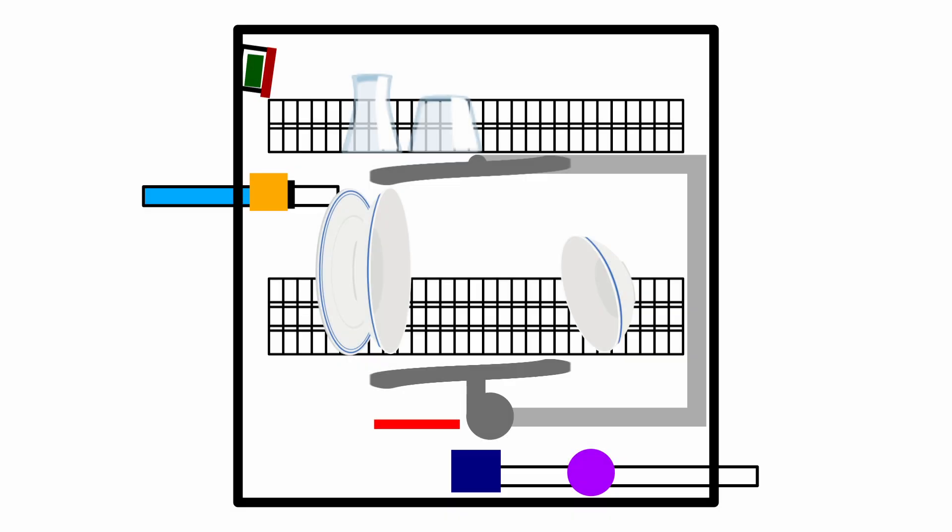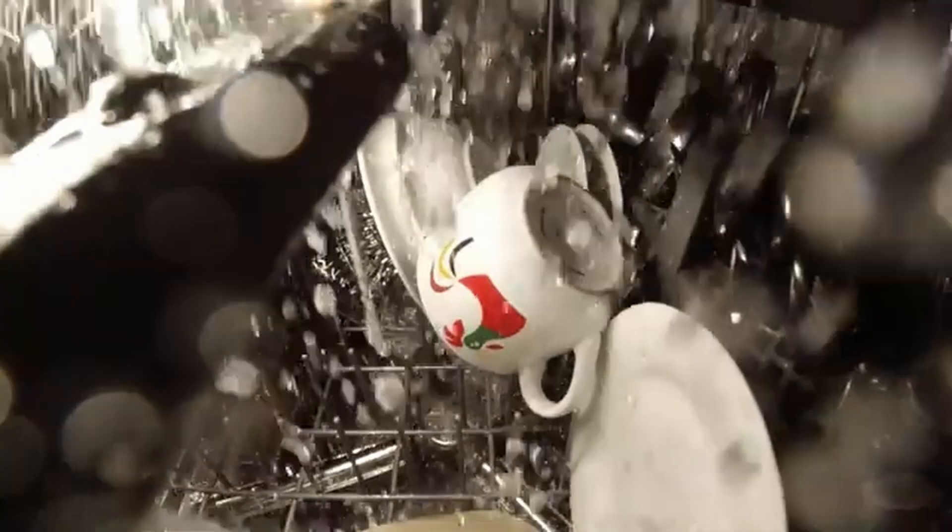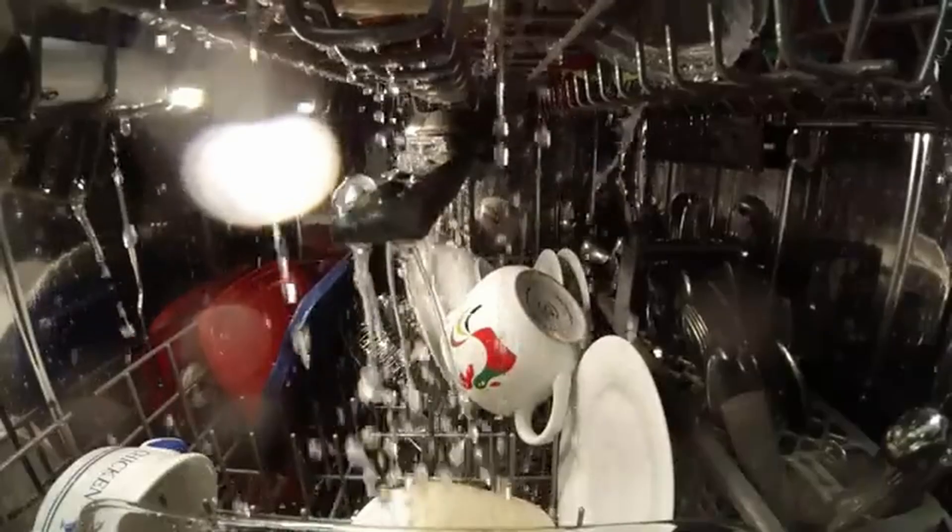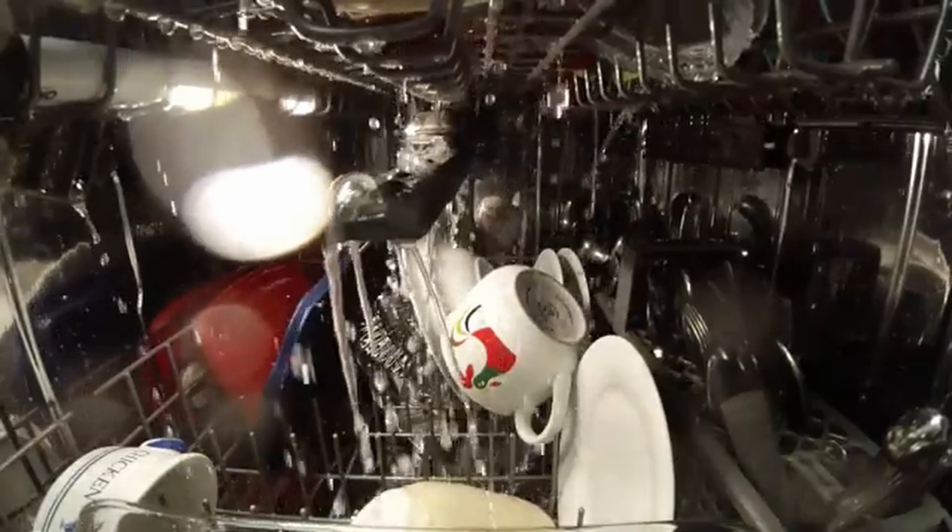The water enters via an inlet valve which controls the rate of filling ensuring the right levels of water are in the dishwasher during the cycle. This is a very important function, as having the incorrect water levels can result in ineffective washing, when there either isn't enough water to remove debris from the dishes, or there is too much water resulting in over dilution, a waste of water and energy. Having the wrong amount of water can even cause damage to the dishwasher itself.